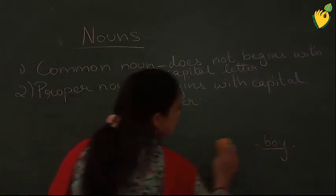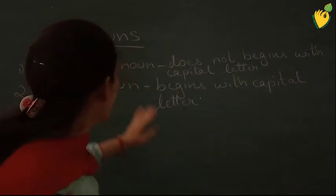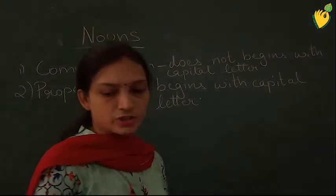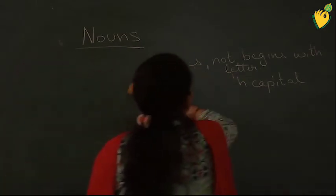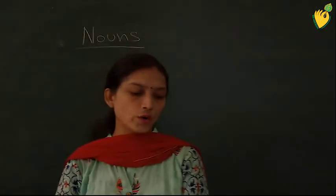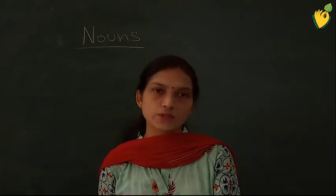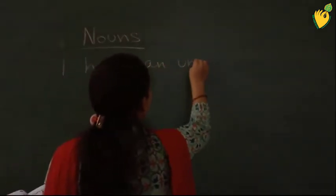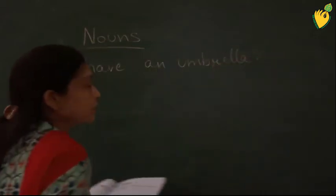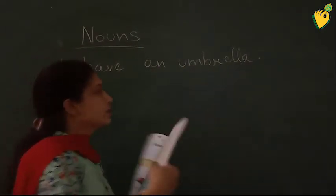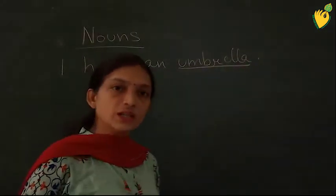Common noun is written with a small letter — it begins with a small letter, and proper noun begins with a capital letter. Now we will do an exercise. Read and underline the nouns in the sentences. First: 'I have an umbrella.' Here, umbrella will be your noun as it is the name of a thing.